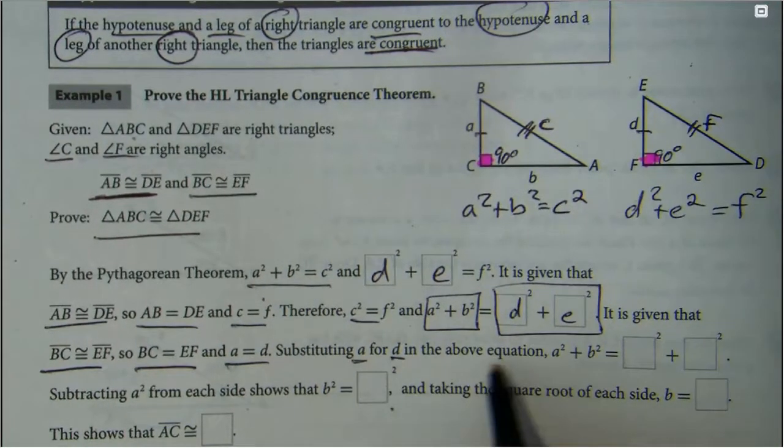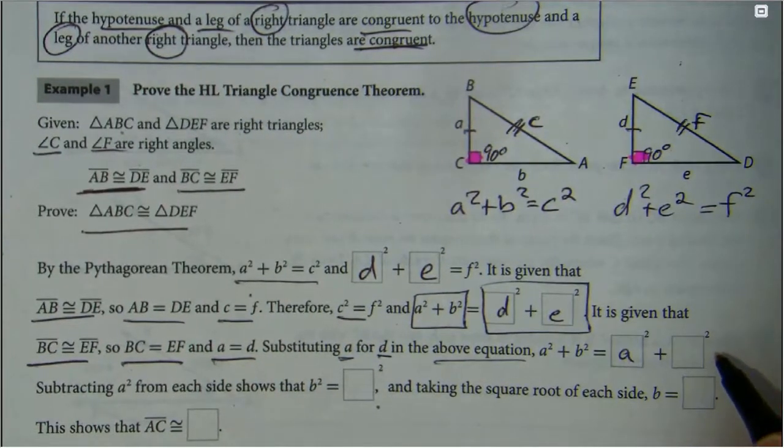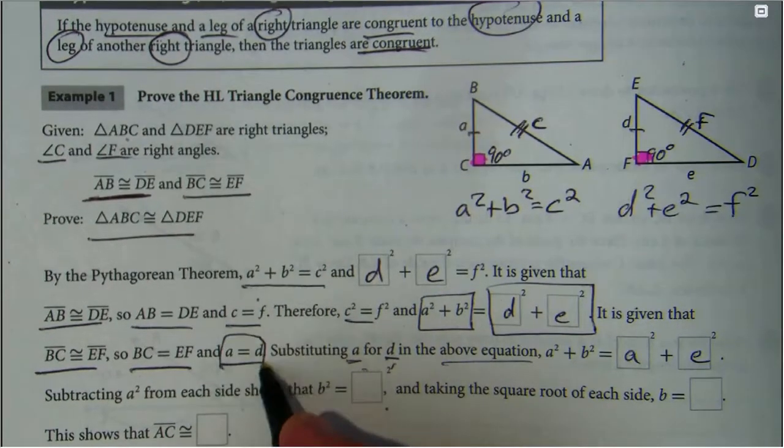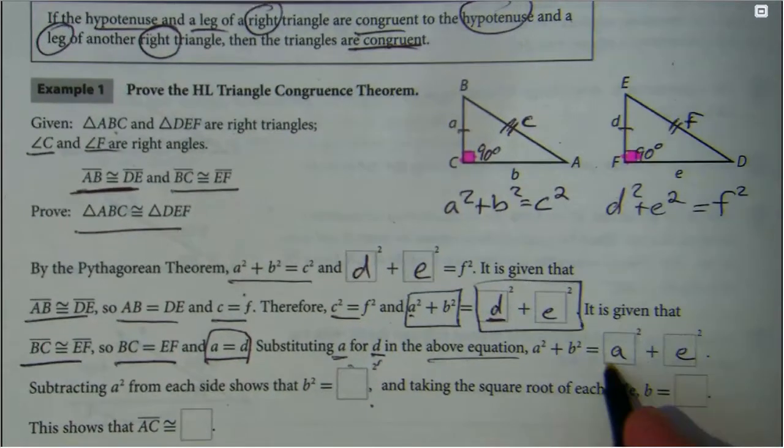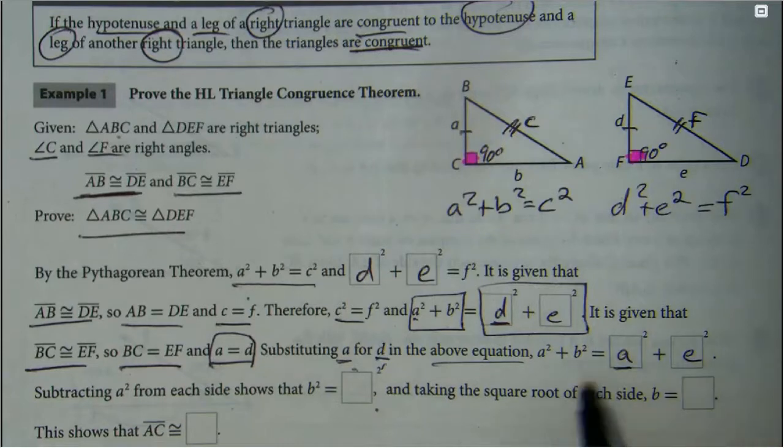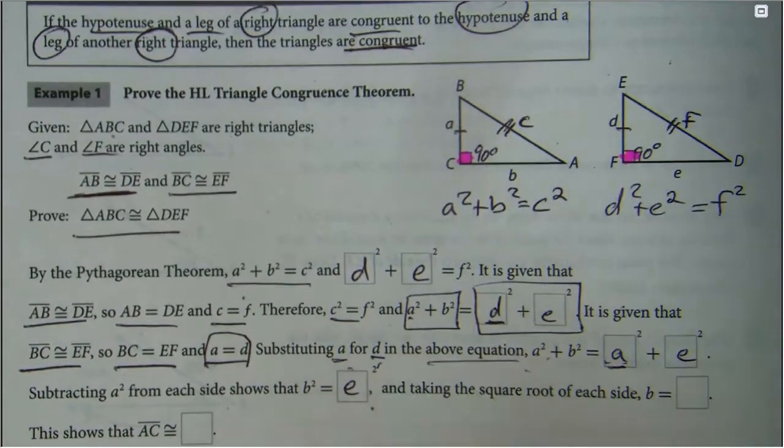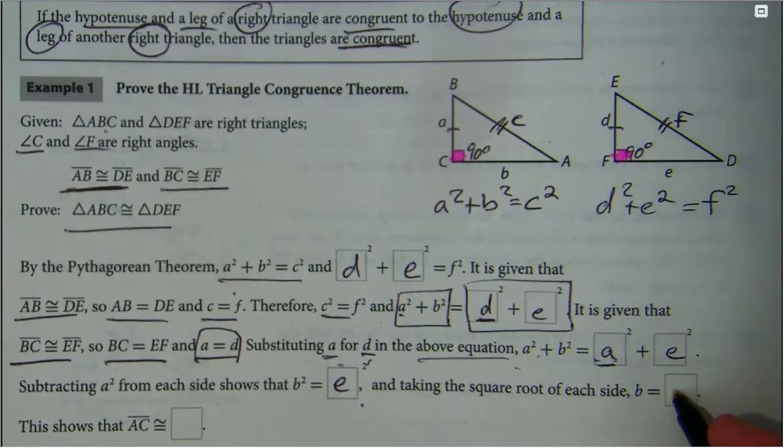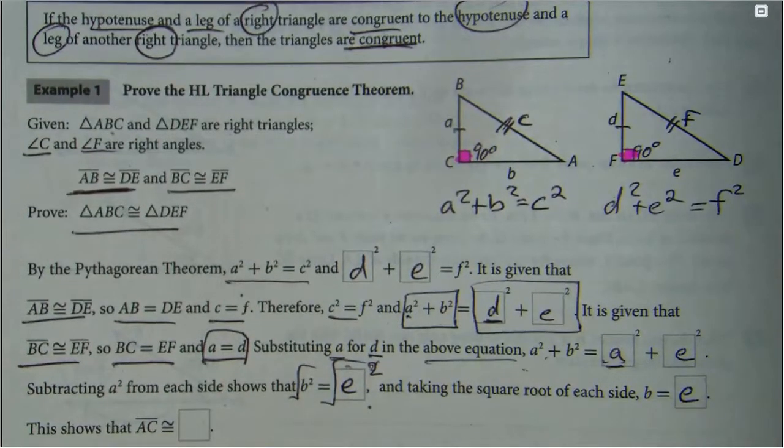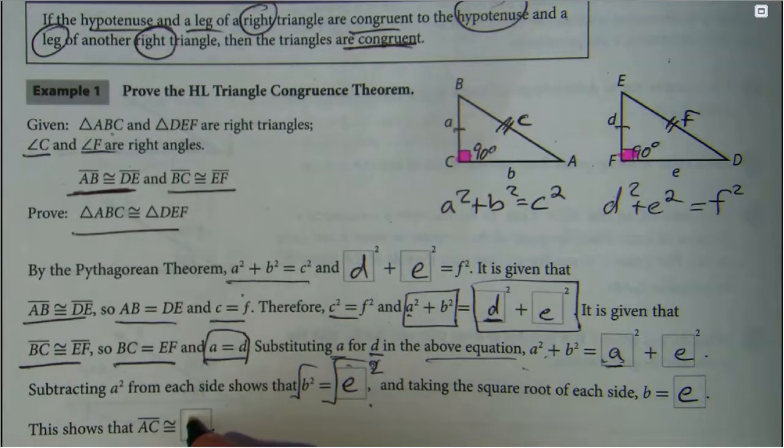Then they tell us some more congruency about the legs. That means their measurements have to be the same, therefore a has to equal d. Substituting a for d in the above equation, we're going to have a squared equal e squared. Could we subtract a squared from both sides? Then all that's left is b squared equals e squared. If you square root both sides, b equals e.